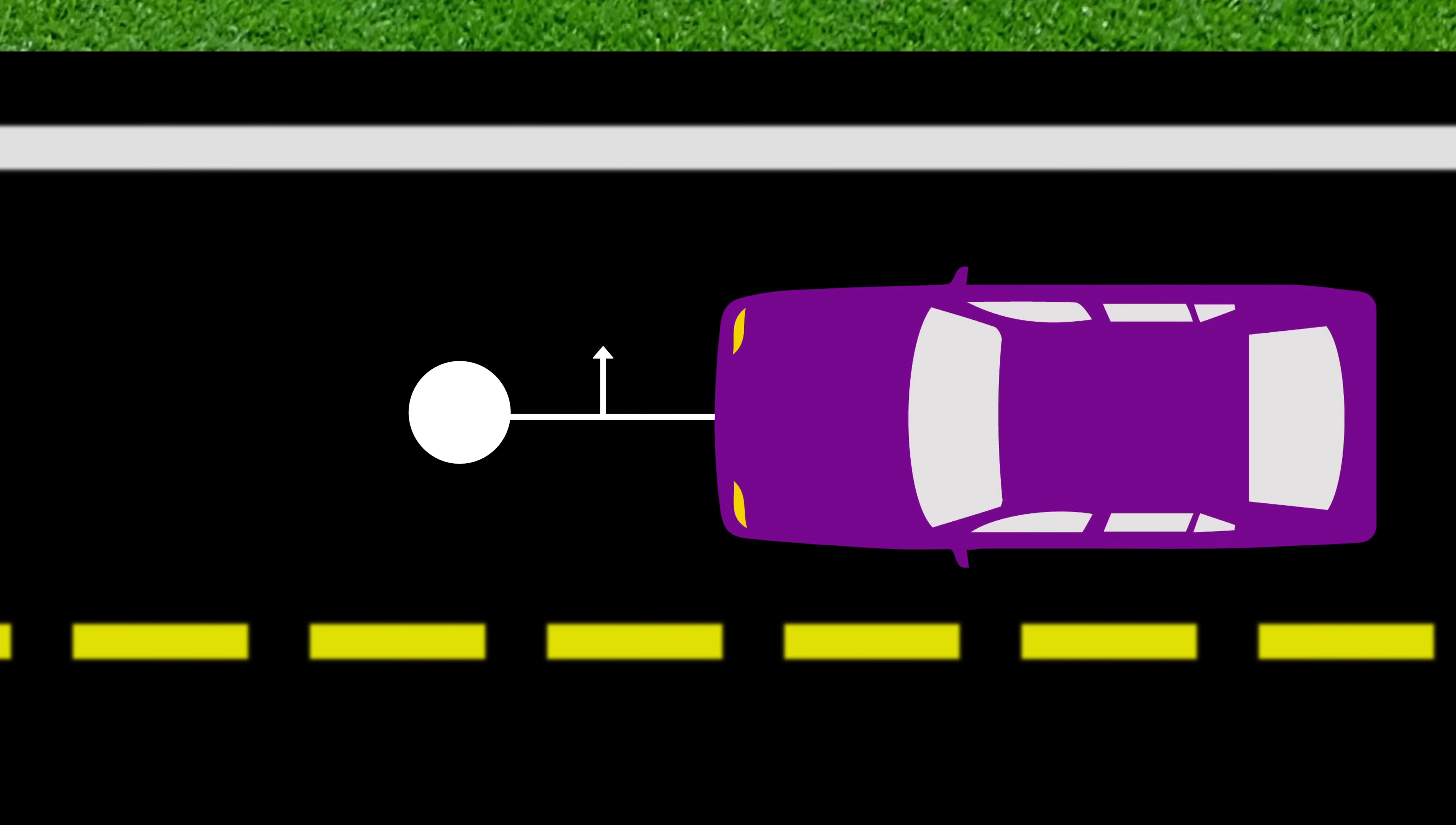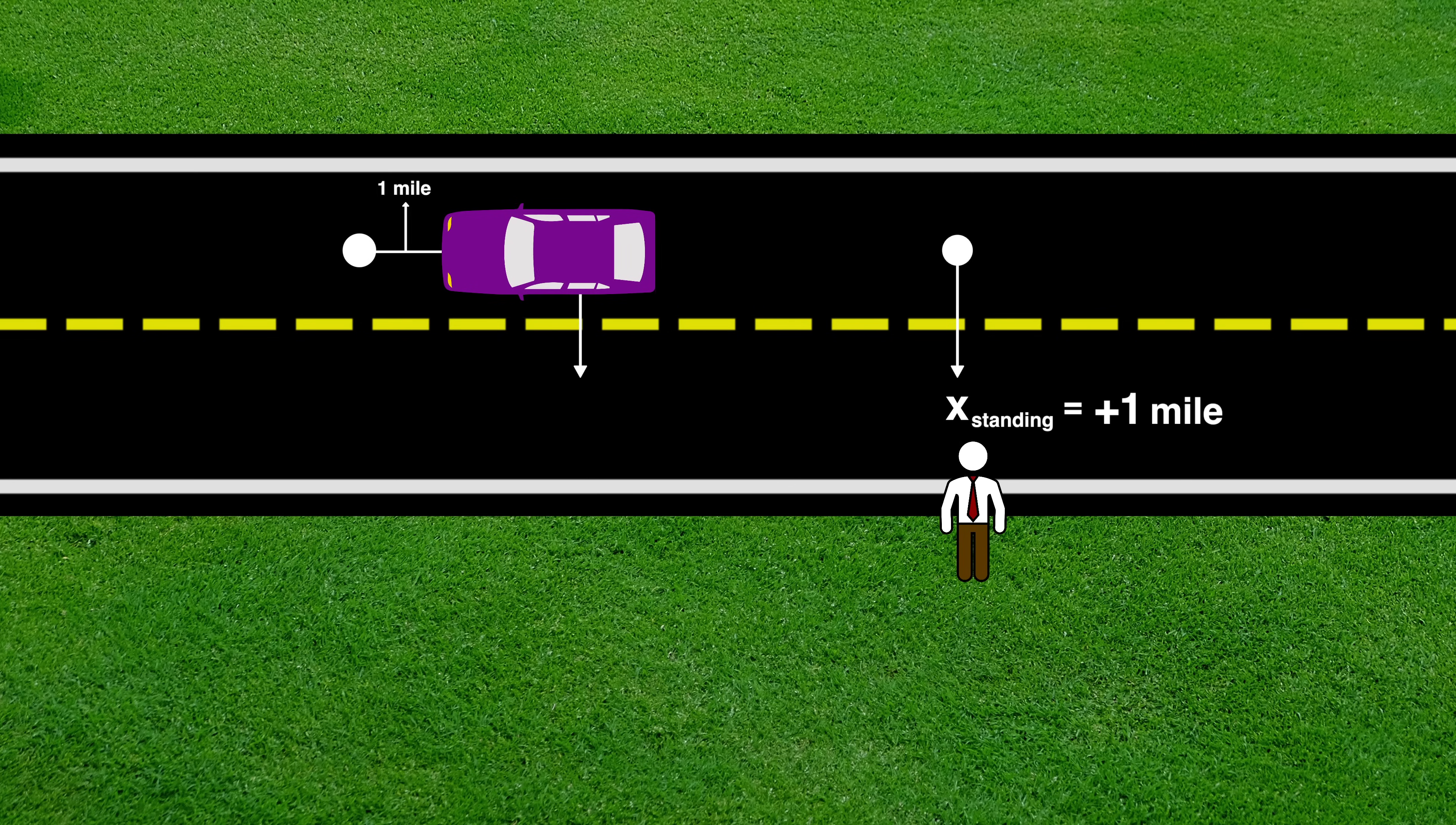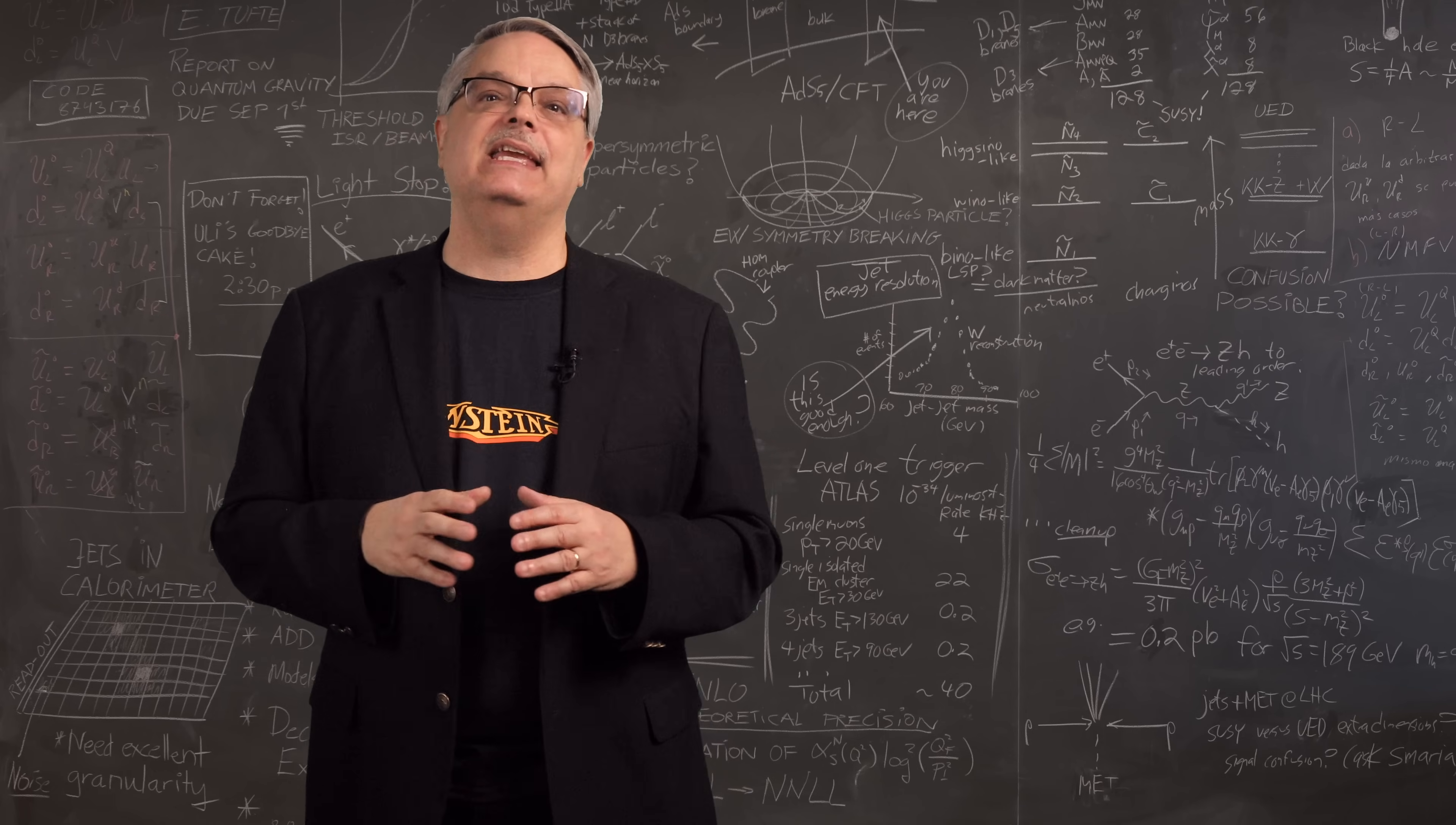If the car guy picks a location that is stationary as far as he is concerned, say a mile ahead of him, then the standing guy also sees that location moving. At the moment the car passes the standing guy, that location is at x substanding equals plus one mile. After half an hour, that location is at plus thirty-one miles. After an hour, that location is at plus sixty-one miles and so on. We can thus make a general equation that tells us how to convert between these two egomaniacs' viewpoints.